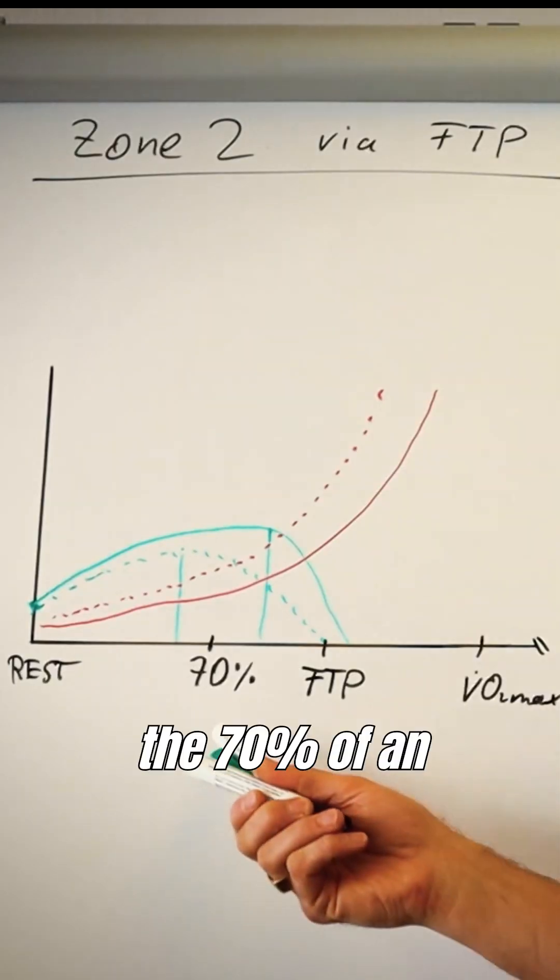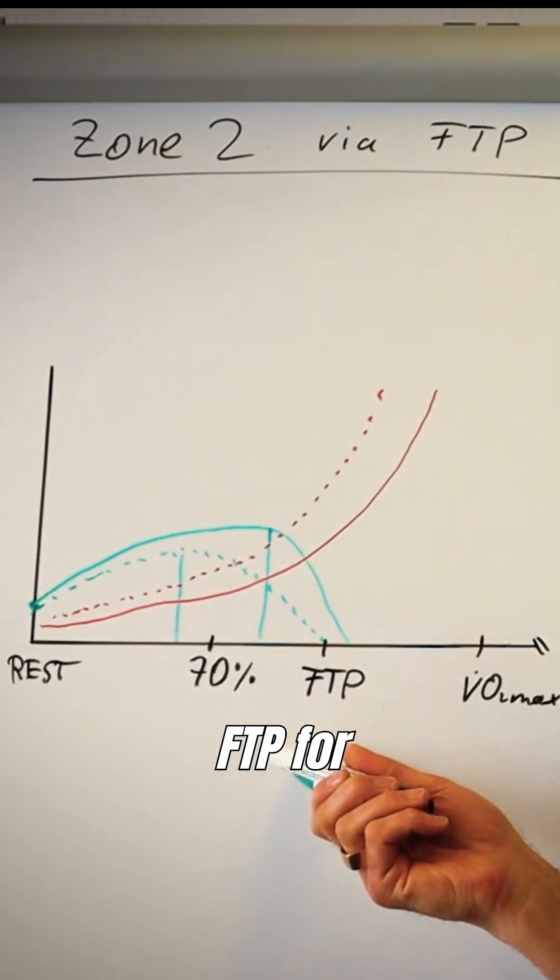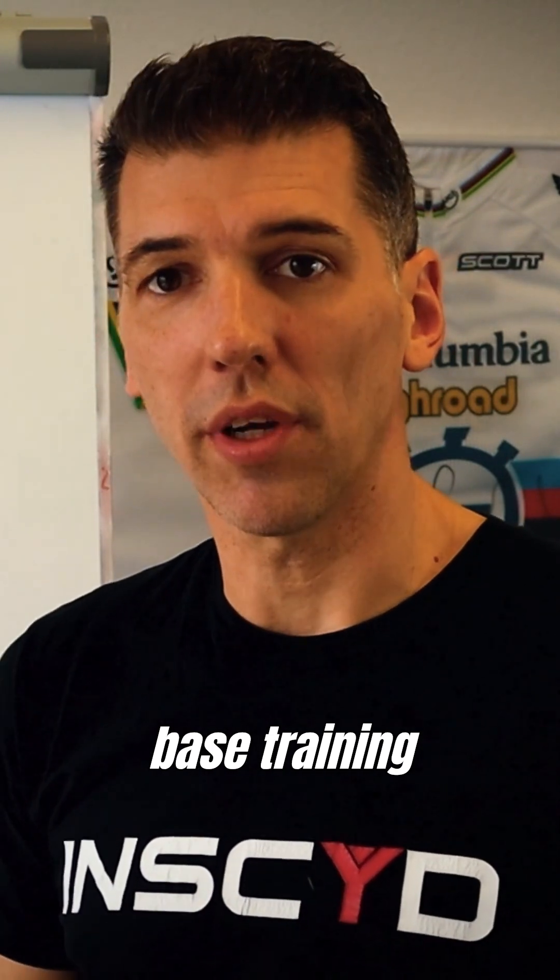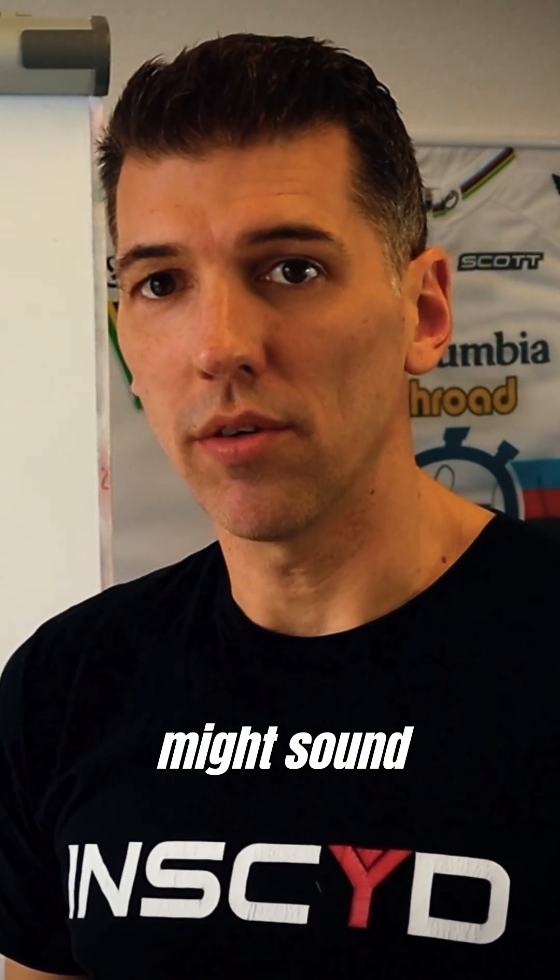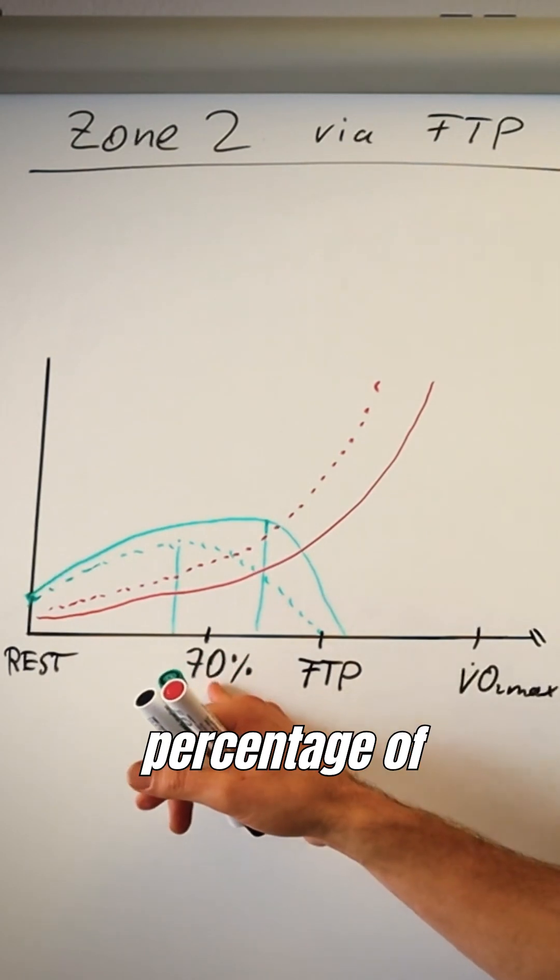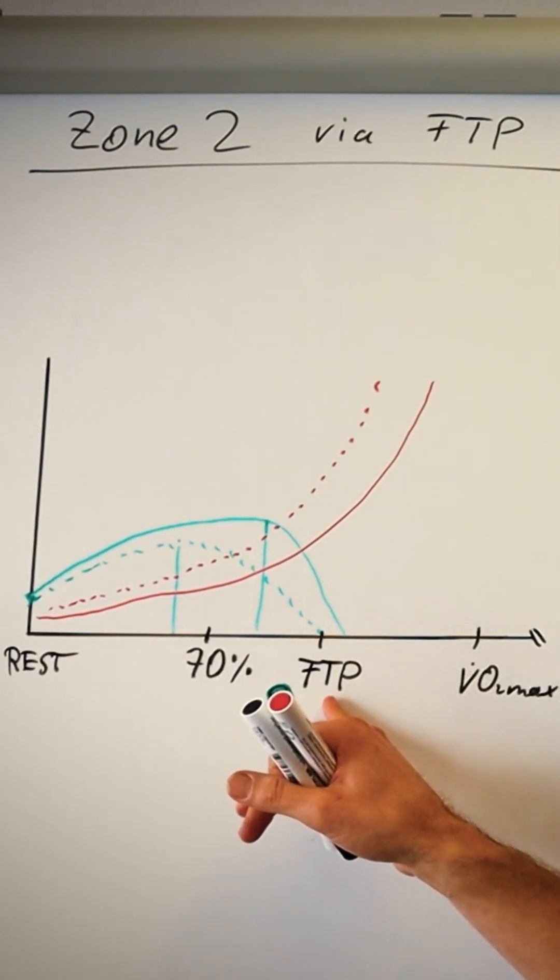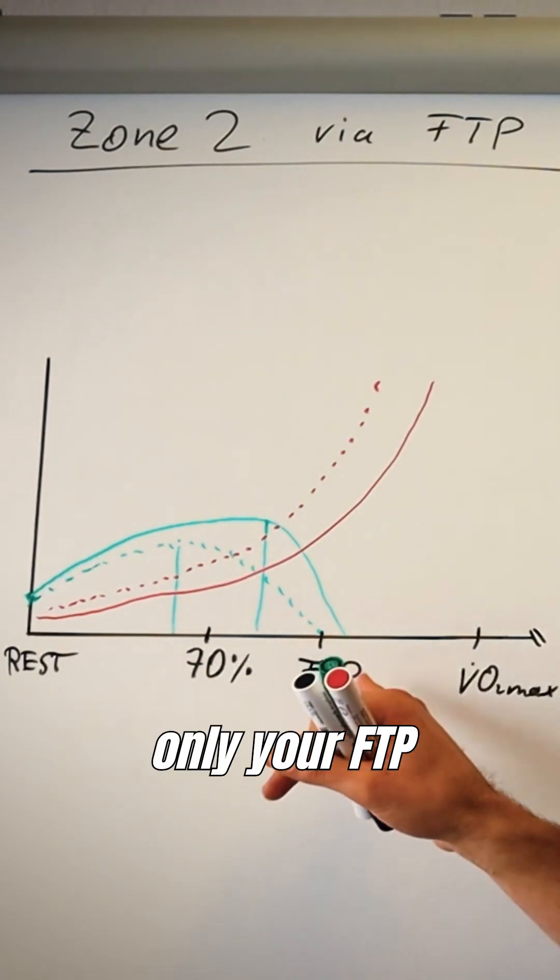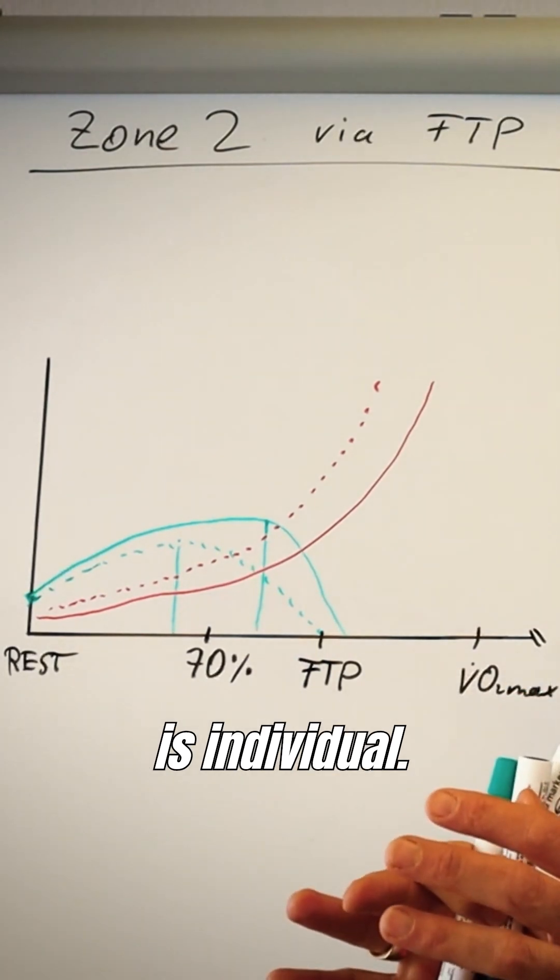Unfortunately, the 70% of FTP for your Zone 2 based training might sound and look like, at first glance, an individual training zone or training intensity because it's a percentage of your FTP. But the problem is only your FTP is individual.